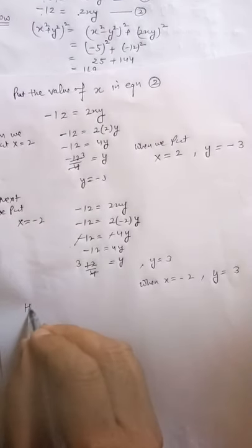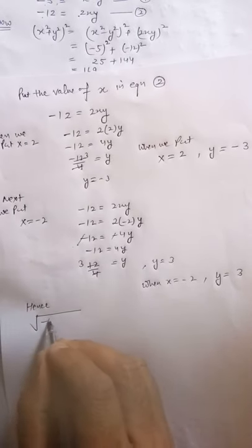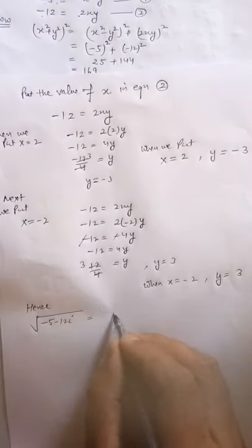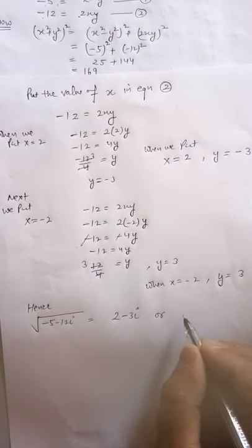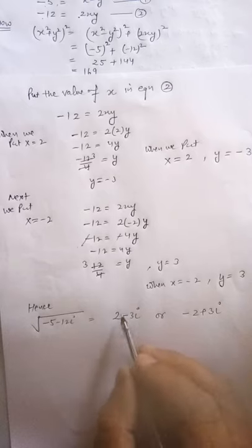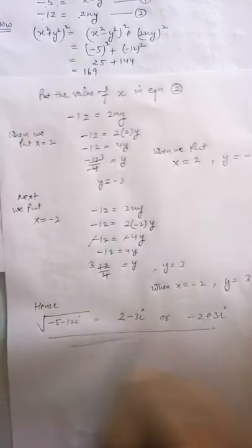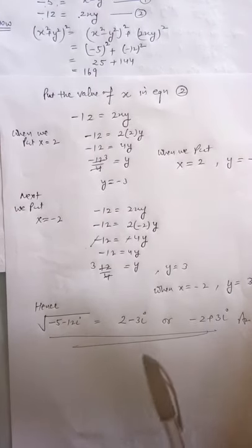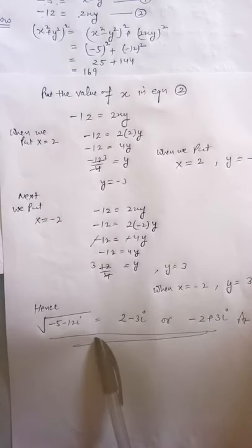Hence, the square root of minus 5 minus 12i is equal to 2 minus 3i, or minus 2 plus 3i. This is the result. Both the numbers are the square root of this complex number.